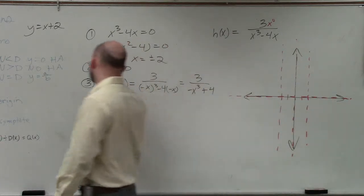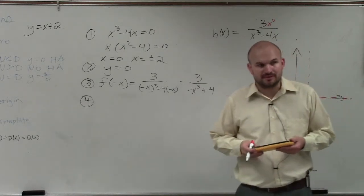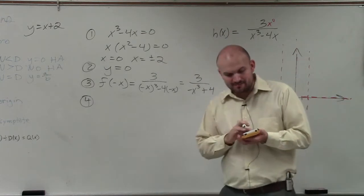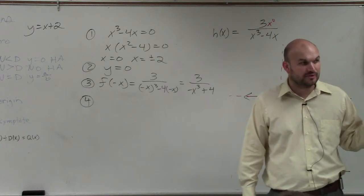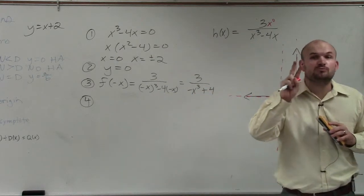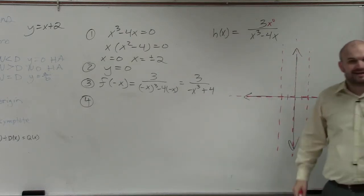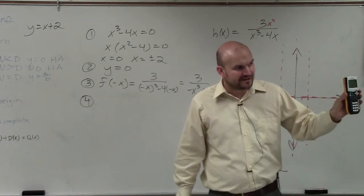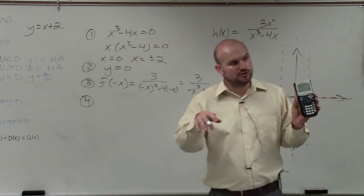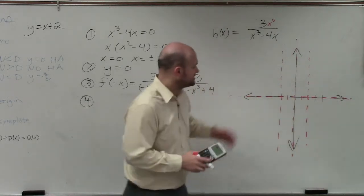Step number four is to choose points. If you do not have a graphing calculator, my recommendation is to choose two points to the left and to the right of each asymptote so you understand what the graph looks like. If you have a graphing calculator, you can just graph it and check the table values. If you're doing homework, plug it into Google so you can see the graph. But make sure you can evaluate for points.